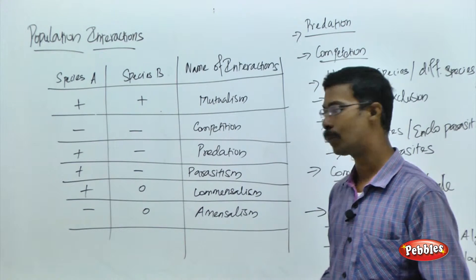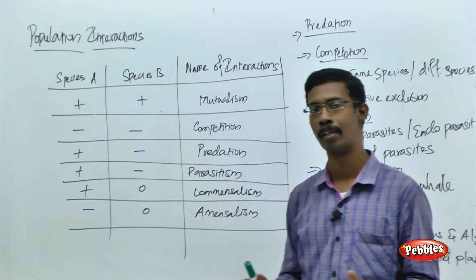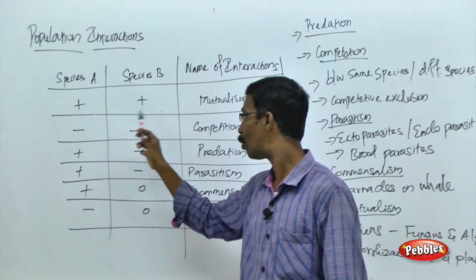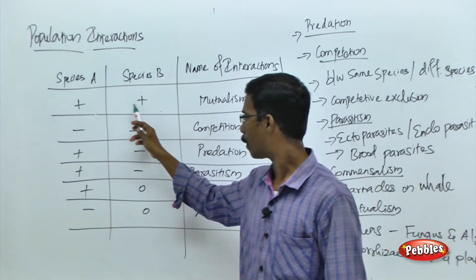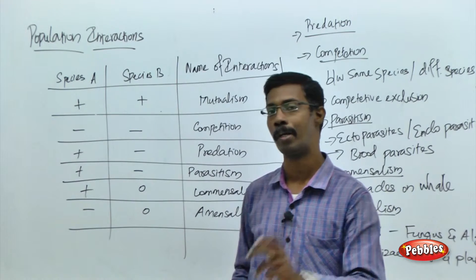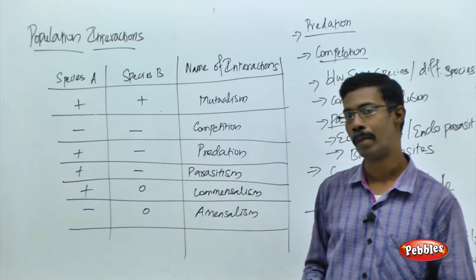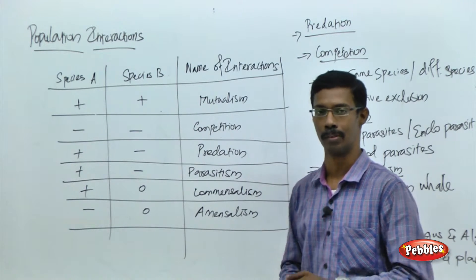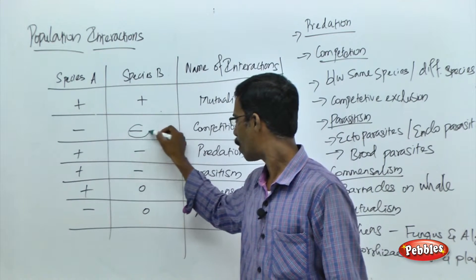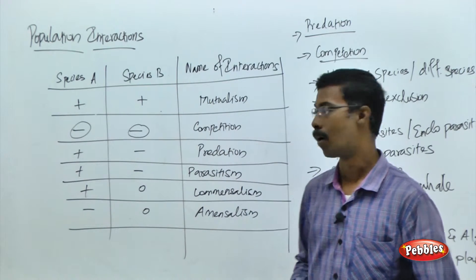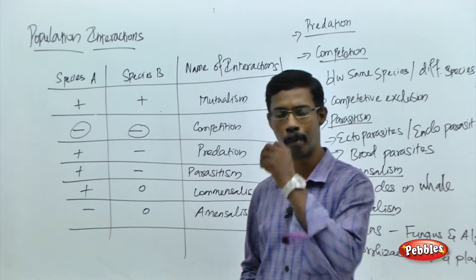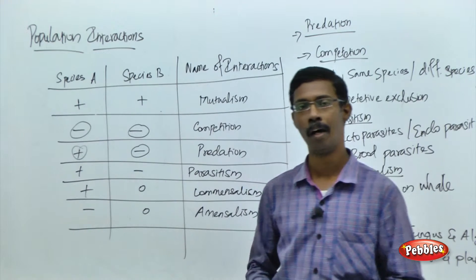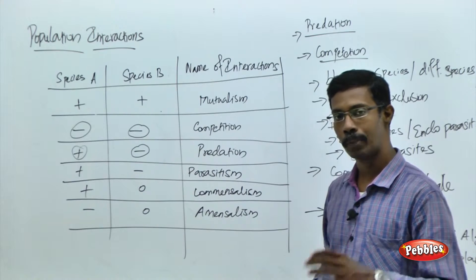Mutualism refers to both organisms getting beneficial effects because of the interaction — both species A and species B live together and both get beneficial effects. The plus sign refers to they are getting beneficial effects from the interaction. Competition refers to species in a particular place fighting for common resources. In competition, both are negatively affected by the interaction. Predation refers to the relationship between a predator and prey — the predator gets a beneficial effect and the prey is killed or harmed by the predator.